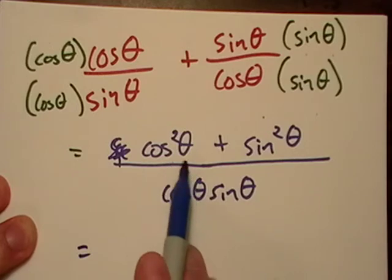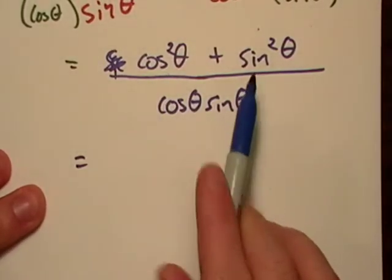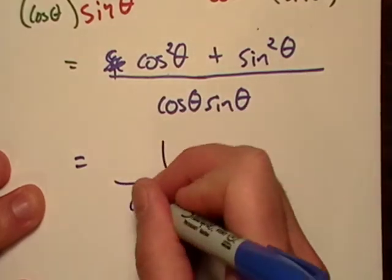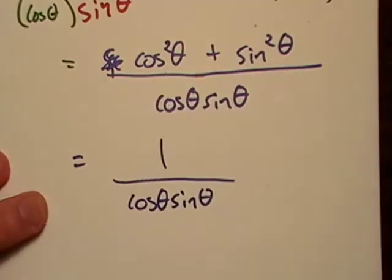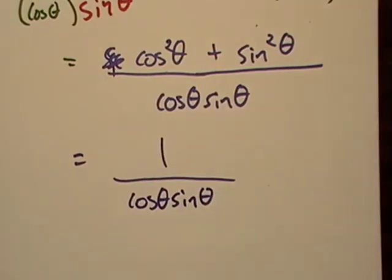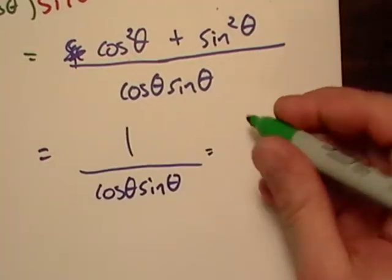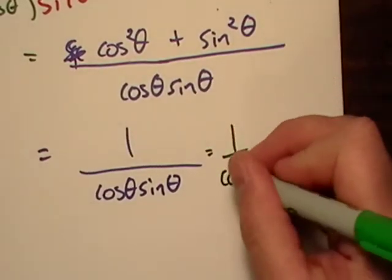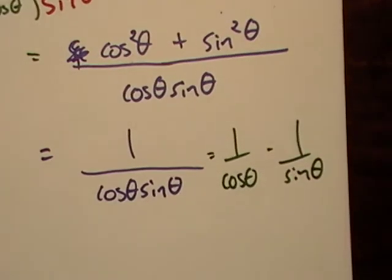Okay, so it looks like - remember the Pythagorean identity that says that cos²θ + sin²θ = 1? So we can take this down to cosθ... Okay. And also, the way I like to think about this is cosθ times 1/sinθ, right?